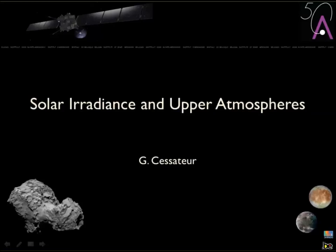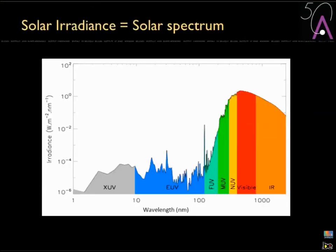I will talk about solar irradiance and also planetary upper atmosphere — the connection between those two. First, I will concentrate on the solar irradiance part. Here we have the solar spectrum, which is solar irradiance. As a first approximation, you have a black body at 5770 Kelvin.